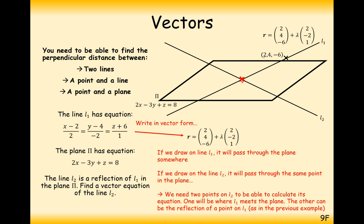We're going to take the coordinate (2, 4, -6) — the easiest coordinate we know is definitely on line 1 — and reflect that in the plane to get a coordinate down here. Remember, we need to go through a midpoint coordinate M, and then double that value of lambda to get to the bottom. We're going to reflect this point down, then find the intersection between the plane and the line, and connect these two up together to get the equation of line 2.